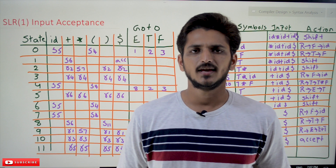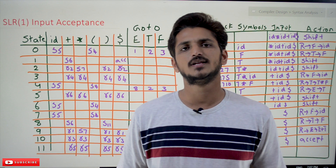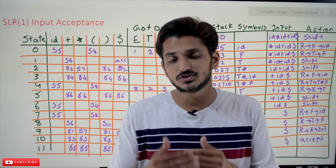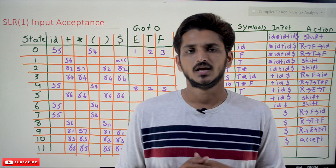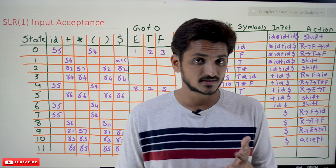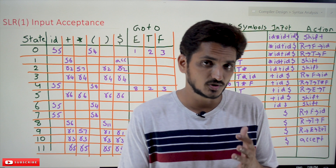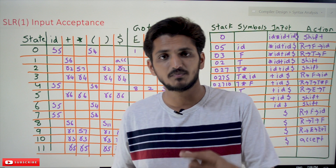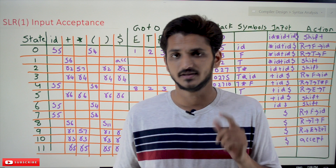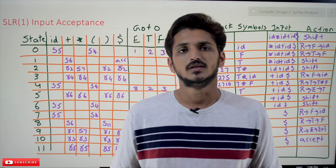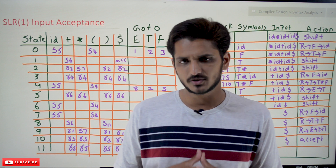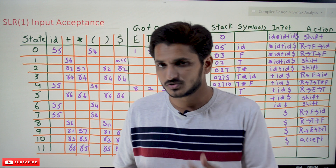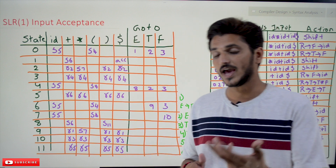Hi, welcome to Learning Monkey. I am Raghu. In this class we will discuss how SLR(1) input string acceptance is done. In previous classes we already discussed how to construct LR(0) items and from that how to construct the SLR(1) parsing table — please watch those classes and come back here. This is a continuation class; the link for the playlist is provided in the description below. Today we will take an example and understand how the input string is accepted.